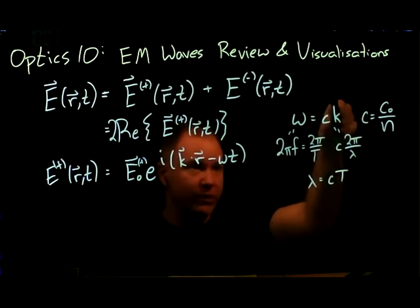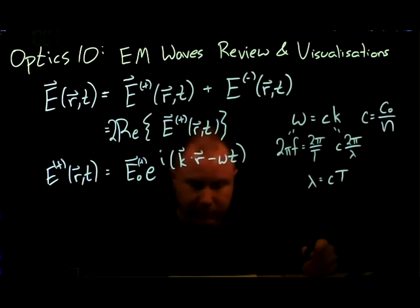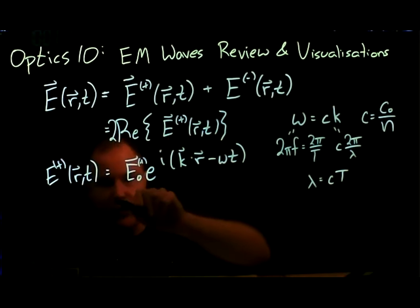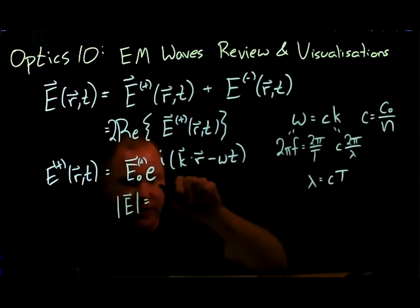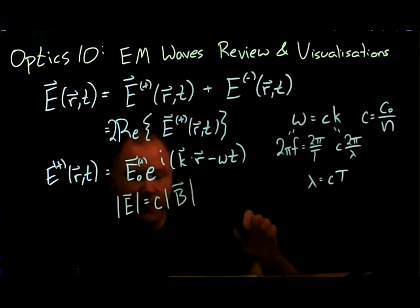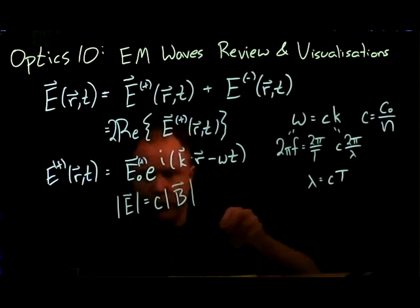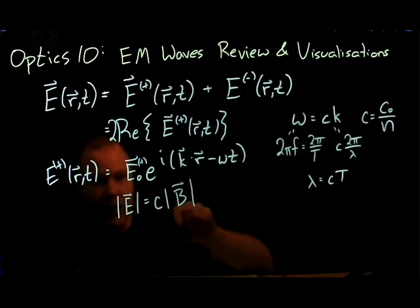Maxwell's equations also give us the relationship between the electric and magnetic field. The magnitude of the electric field is just the speed of light c times the magnitude of the magnetic field, which is useful when we calculate the intensity. Before the intensity, the Poynting vector is how much power per area is being transferred — it's a vector because the power is being transferred in some direction.